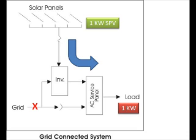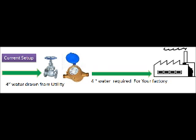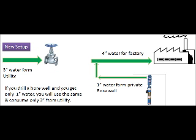In practice, generation and load will rarely match. In the event the load requirement is high — say 1.5 kilowatt — 1 kilowatt will be drawn from solar and the balance power requirement is completed from the grid. This is synonymous to the following situation: suppose your factory needs water drawn from a 4-inch pipeline from the utility. Now you make a bore well but get only 1-inch water. You start using 1-inch from the bore well and the balance requirement is met from 3-inch water from the utility.